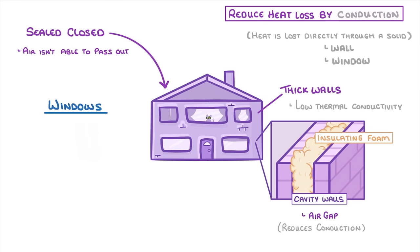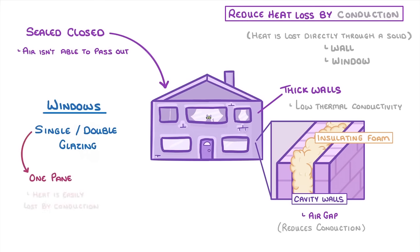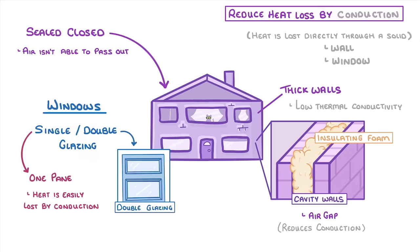We actually do a similar thing with our windows. If you've ever wondered what single versus double glazing is, it has to do with how many layers of glass there are. In single glazing, which is what older houses tend to have, there's just one pane of glass, and so heat is easily lost by conduction. In double glazing, there are two layers of glass with a tiny air gap between them, which again reduces conduction because the heat can't be conducted across the air gap, and so can't be conducted from inside your house to outside.